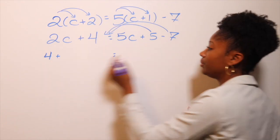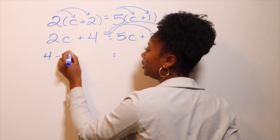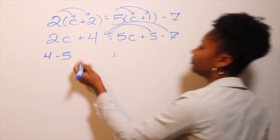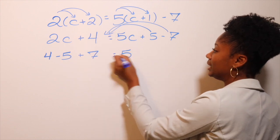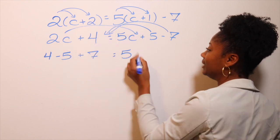When the 5C moves over, it becomes negative 5. When the 7 comes over, it becomes positive 7. When the 2C goes over, it's negative 2C. And again, the 2 is going behind the 5, okay?